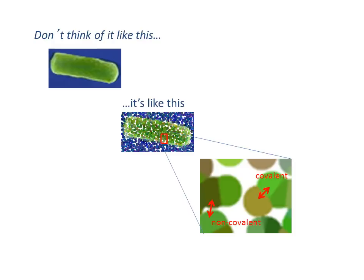Atoms interact with each other in stable configurations on two different energy scales. The stronger interactions, called covalent interactions, have bond energies on the scale of 300 kJ per mole. The other type, non-covalent bonds, are much less stable with energies on the scale of 20 kJ per mole. In the context of the dynamic, water-rich environment of the cell, the energy difference between covalent and non-covalent bonds is even more pronounced.